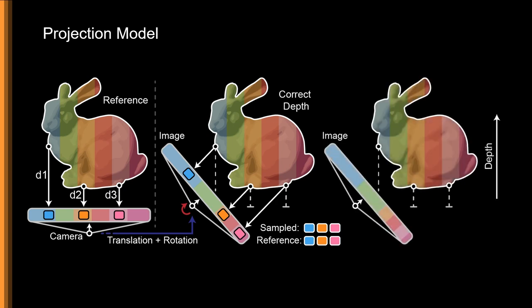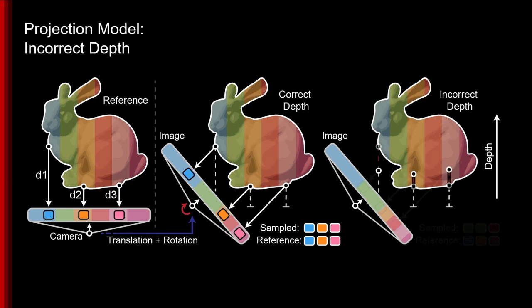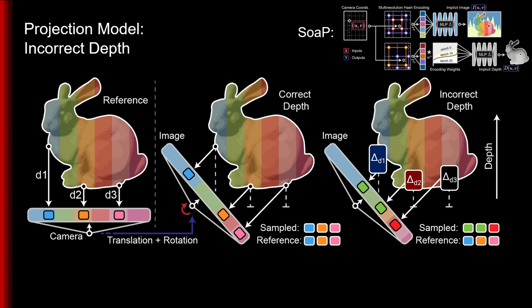If however, the depths are not correct, we now also sample incorrect points in this new frame, which don't match our points from the reference frame, and each point incurs a photometric loss, which we back-propagate to update our implicit RGBD model.